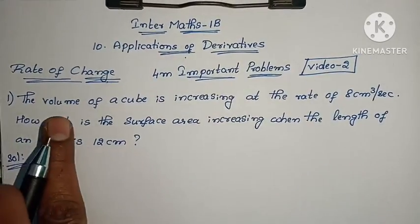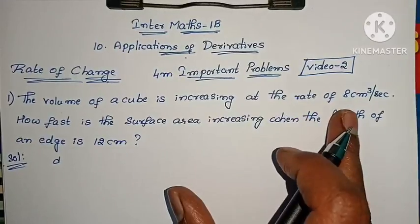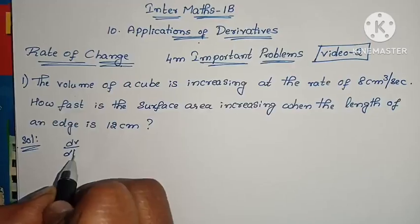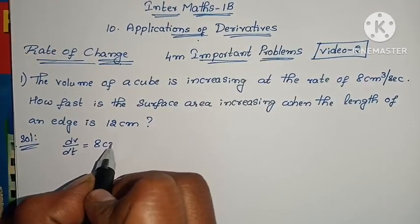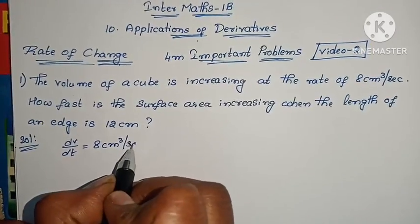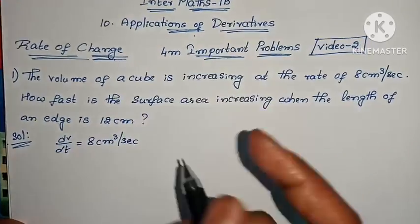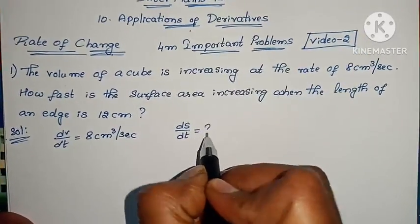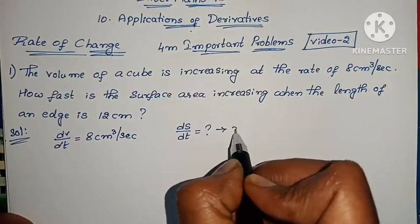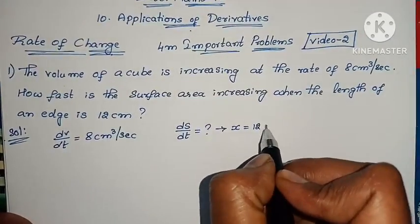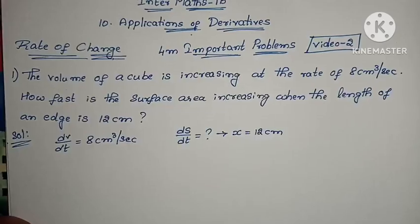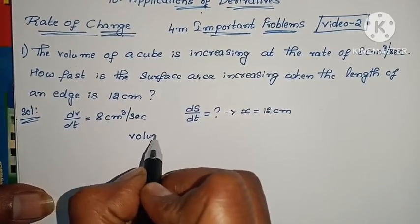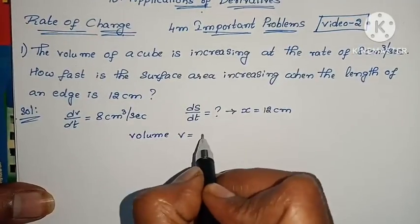The volume of a cube is increasing at a rate of 8 cm³ per second, so dV/dt equals 8 cm³ per second. How fast is the surface area increasing when the length of an edge is 12 cm? We need to find dS/dt at x equals 12 cm. Volume of a cube V equals x³.